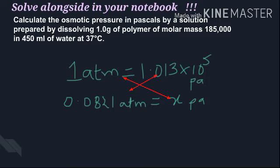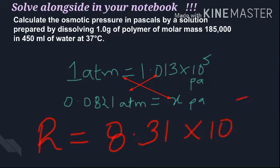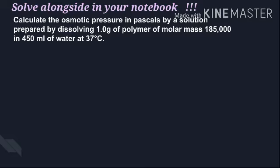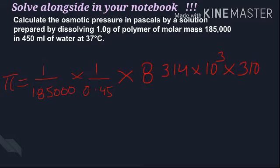The conversion is: 1 atmosphere equals 1.013 × 10⁵ pascals. If we convert 0.0821 from atmospheric units to pascals by multiplying, R becomes approximately 8.31 × 10³. Simply solve our equation and you will get the answer. Solve it yourself and tell me the answer in the comments.